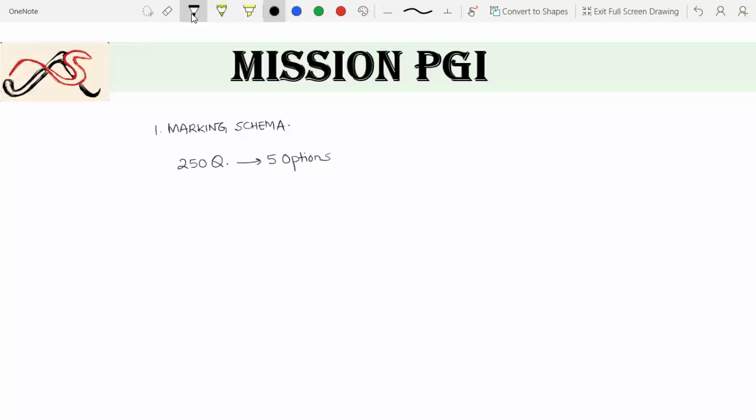So all in all, there are 1250 options which include both correct and incorrect options. Now the marking of PGI is important to understand because ultimately if we know how the options are marked, then only we'll be able to make a correct decision on how many options to mark.